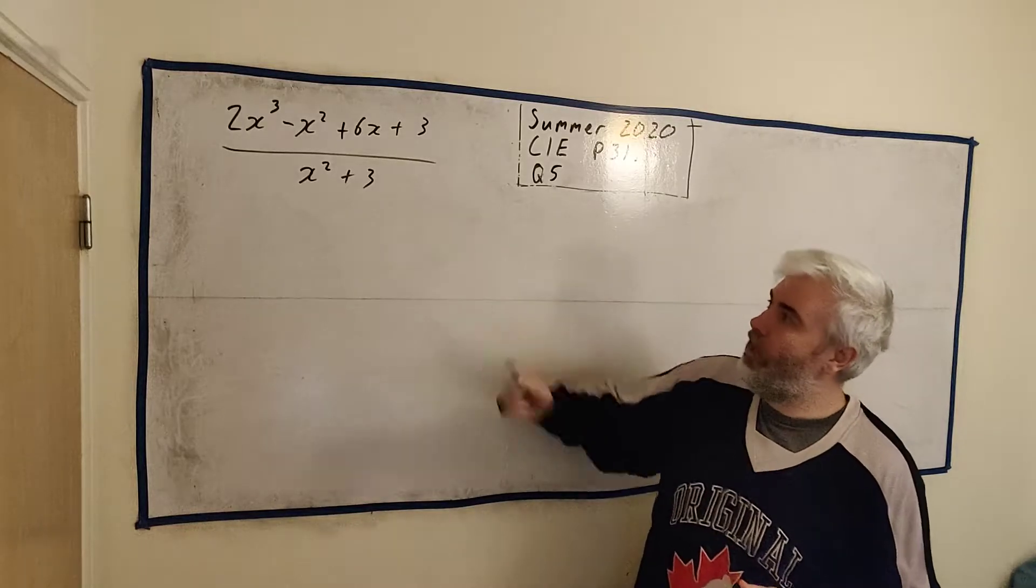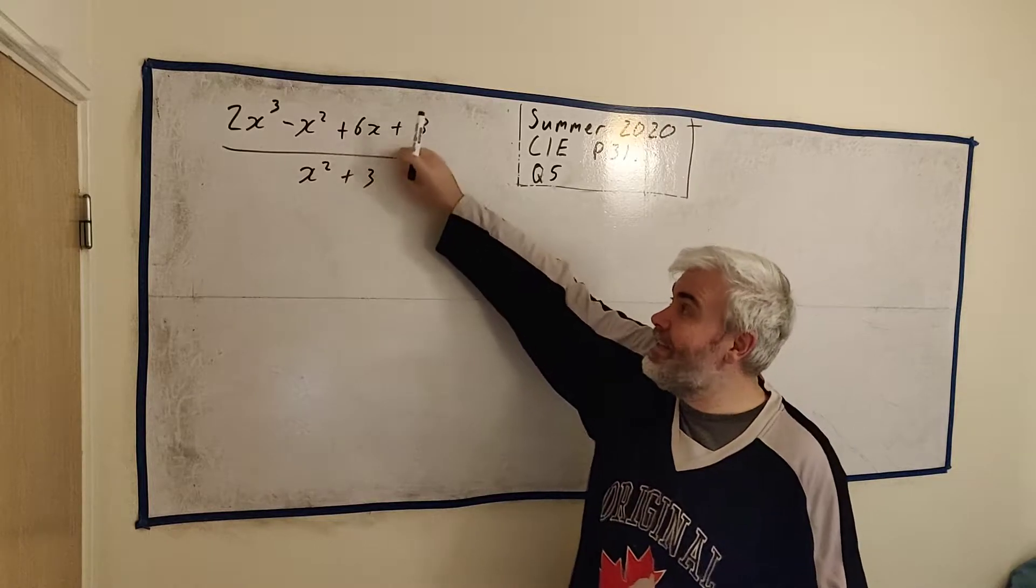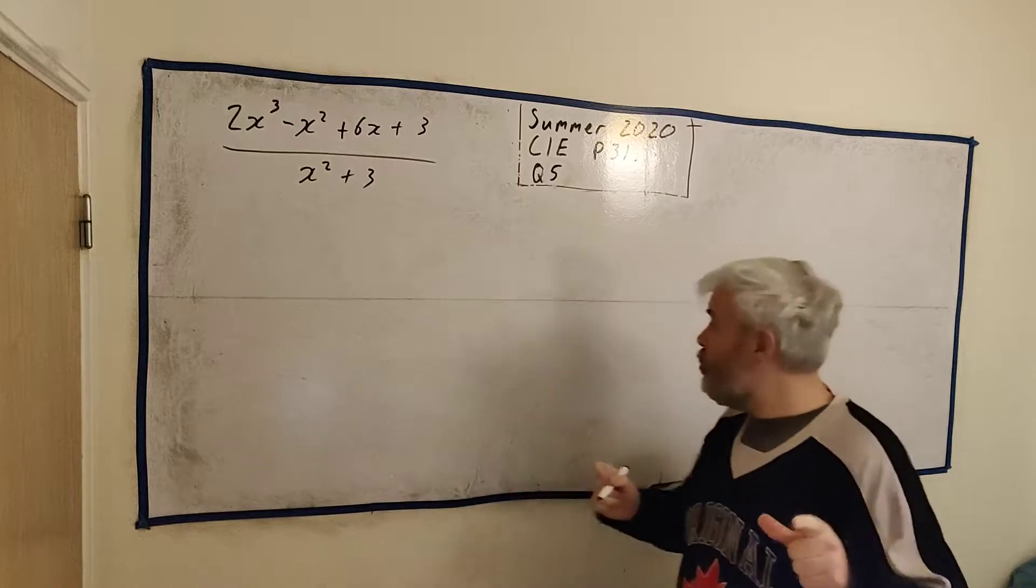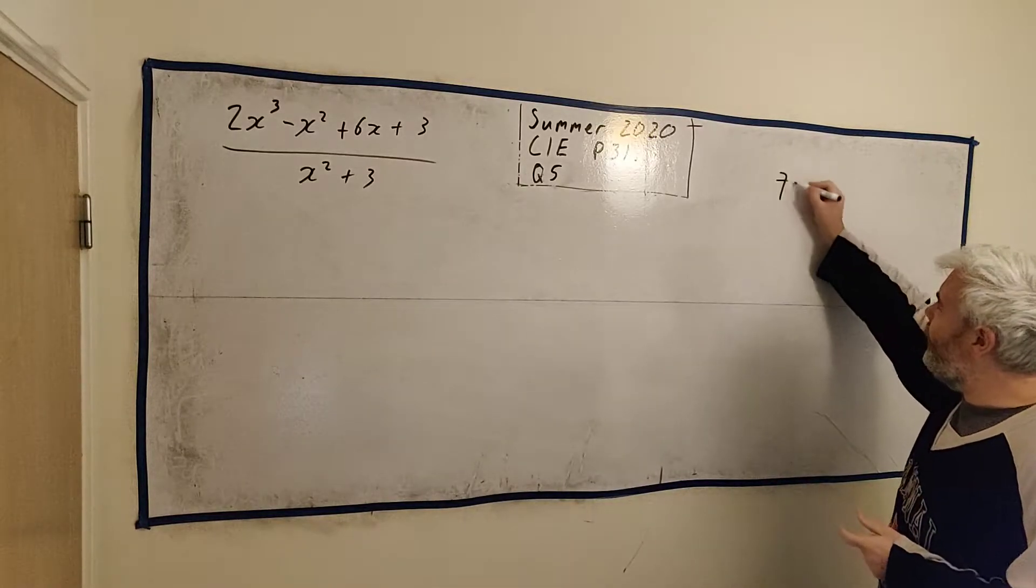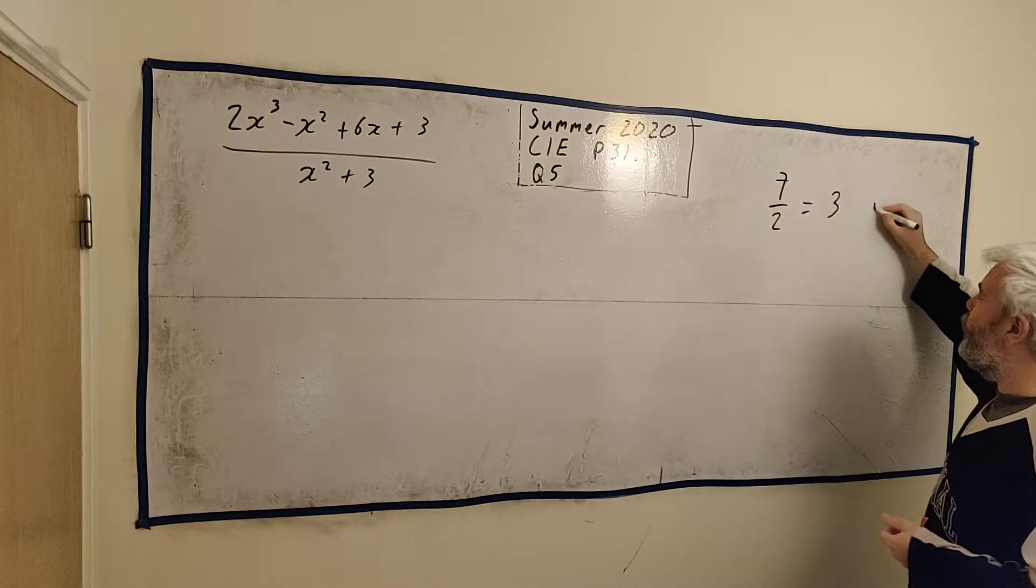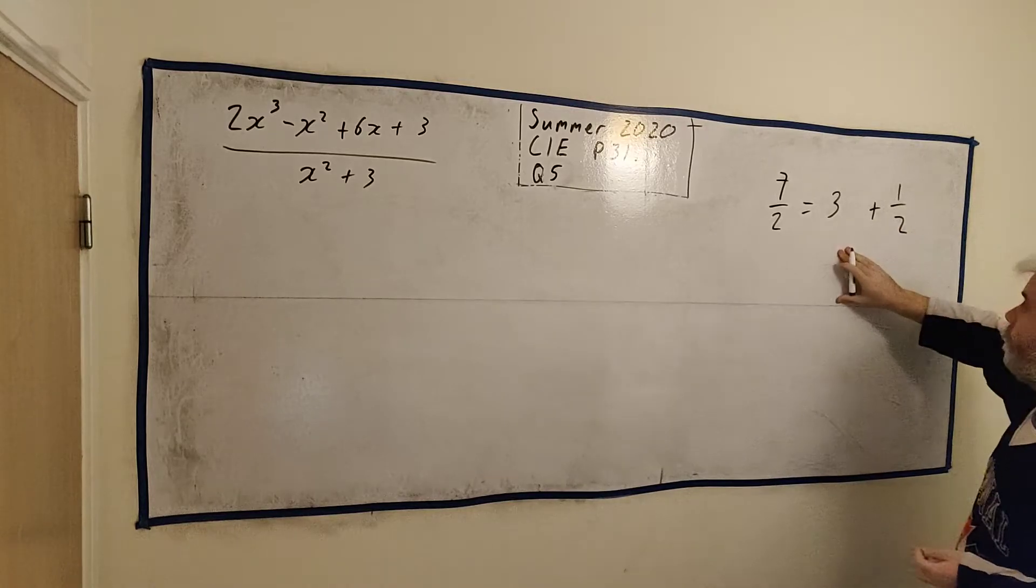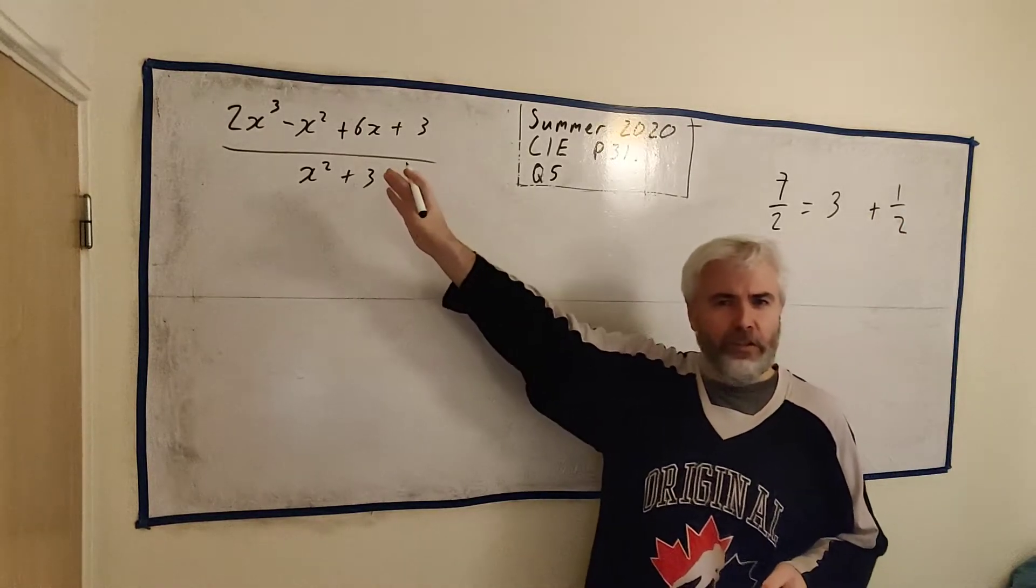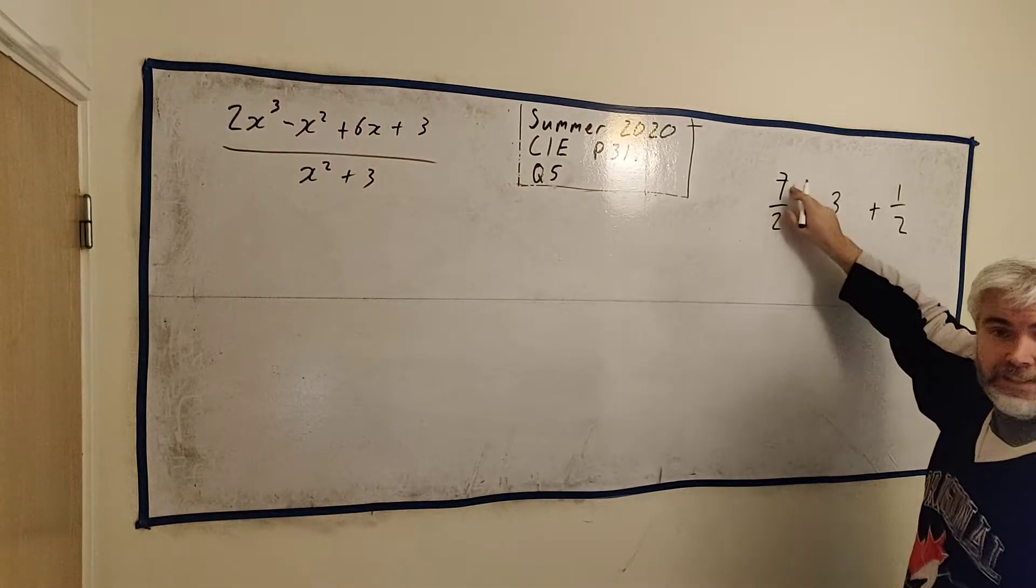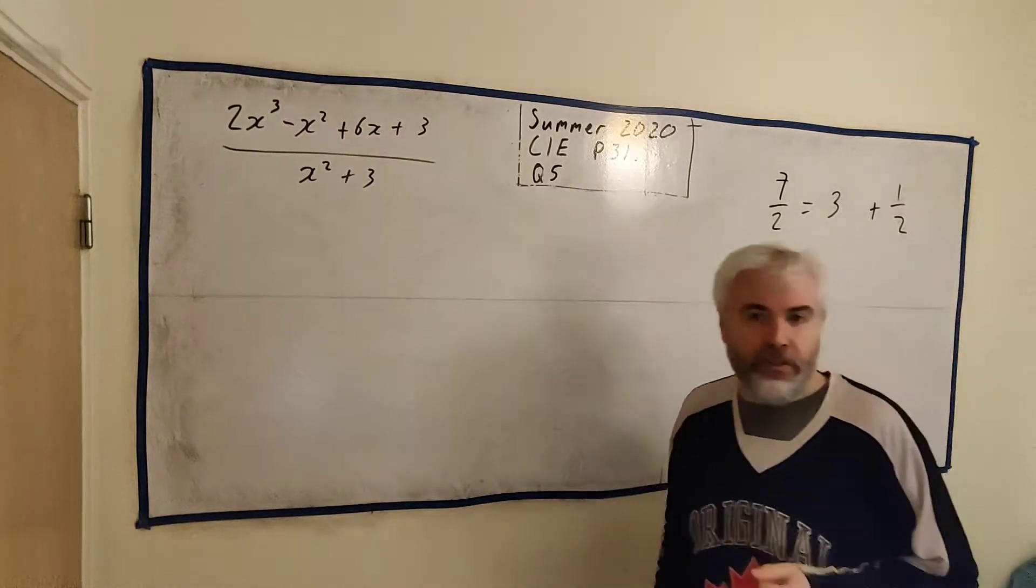The exam gives us these two expressions. They give us the top expression and they tell us it is divided by the bottom one, and they want us to find the quotient and the remainder. Just to remind you, if we divide two digits, 7 divided by 2 will equal 3 plus a remainder of 1, or another way to write that is 3 and a half. So that's what they want us to do here.